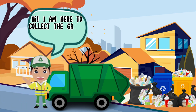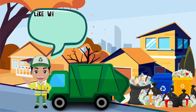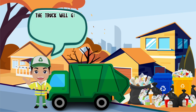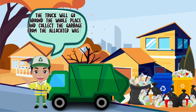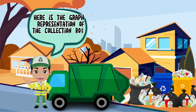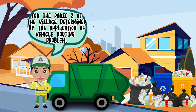I am here to collect the garbage from one of the allocated trash bins in phase two of the village. Like what was done in phase one, in applying the vehicle routing algorithm, the truck will go around the whole place and collect the garbage from the allocated waste bins determined by the dominating set. Here is the graph representation of the collection route for phase two of the village, determined by the application of vehicle routing problem.